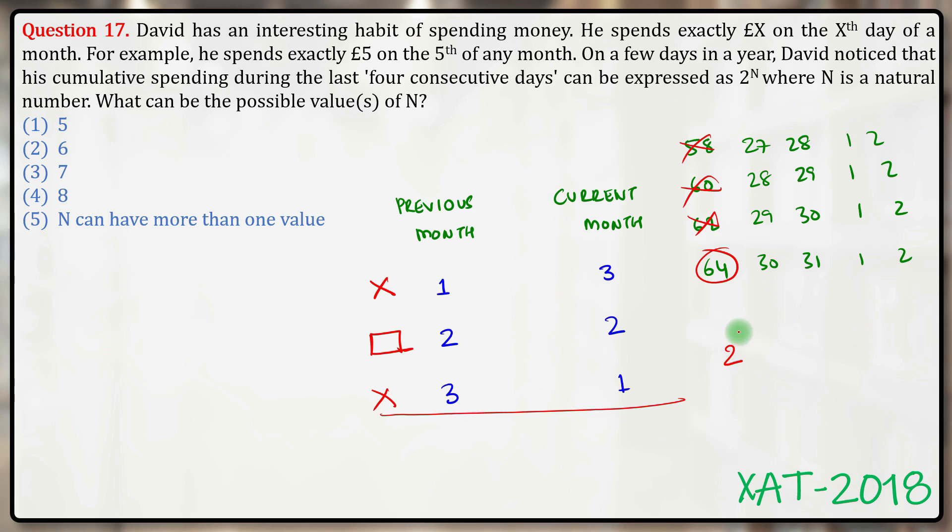we can say 2 to the power 6 is the only possible power of 2 which is the sum of 4 consecutive days of a calendar. Therefore, n equals 6. Answer option 2 is the correct answer.